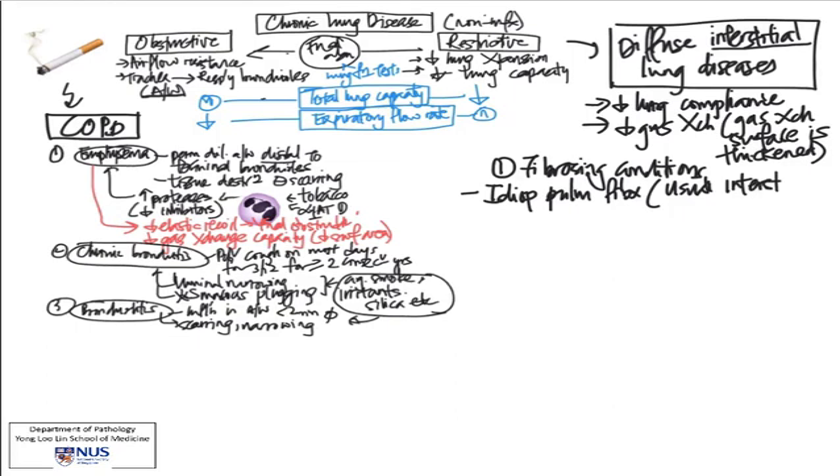So we can start to divide these into several types of conditions, the first of which is the fibrosing conditions. And among these, there are several specific entities. The first was briefly mentioned under the idiopathic category of lung diseases, idiopathic pulmonary fibrosis. This is also known as usual interstitial pneumonia or UIP. There is no known cause for this condition, but it eventually results in marked fibrosis and destruction of the lung parenchyma.